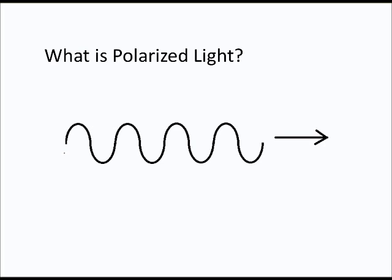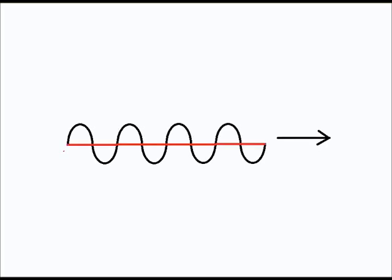Light waves also vibrate horizontally. You can see that in this next diagram — I've added a horizontally vibrating wave here, but it only appears as a red line because you're looking at it from the side, from a side view. So here you have the vertical and horizontal vibrating waves.